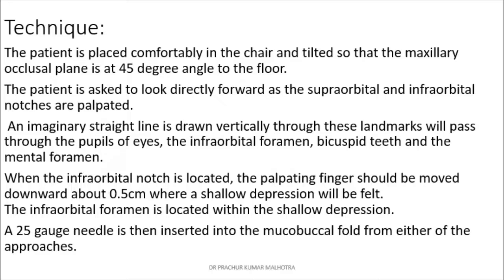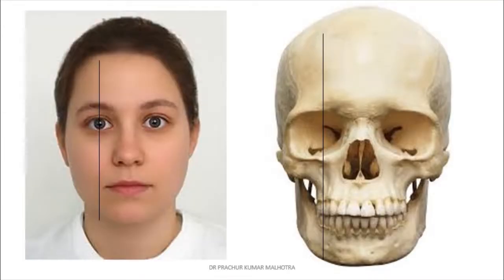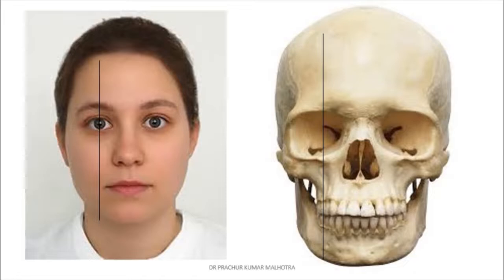After palpating the supraorbital notch, we move to the infraorbital notch and then go slightly downward 0.5 centimeters to find a shallow depression — that is the infraorbital foramen. A 25-gauge needle is then inserted into the mucobuccal fold from either approach. The diagrammatic representation shows that an imaginary line passing through the supraorbital notch, infraorbital notch, and mental foramen — including the pupil of the eye — will all lie in a straight line.